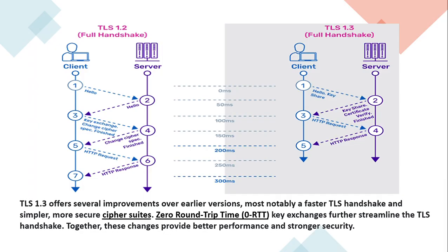Looking at the TLS 1.2 handshake: the client establishes a handshake by sending a Client Hello to the server. The server then responds with a Server Hello to the client. Next, the client exchanges the key with a Change Cipher Spec and Finished message. At step 4, the server side sends Change Cipher Spec and Finished. Then in step 5, an HTTP request is sent from the client to the server, and the server responds to that request.